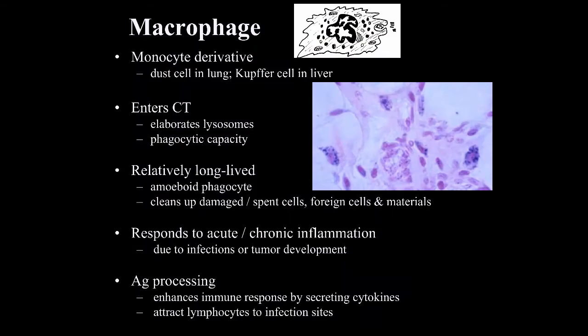Macrophages are another cell type found in connective tissue. They're monocyte-derived. Macrophages in the lung are called dust cells, in the liver they're called Kupffer cells, and in the skin they're known as Langerhans cells. Macrophages enter connective tissue as monocytes from peripheral blood and mature there. They elaborate lots of lysosomes and have phagocytic activity, as shown by the granules within the cells in this image. Macrophages live for a relatively long time within connective tissue.